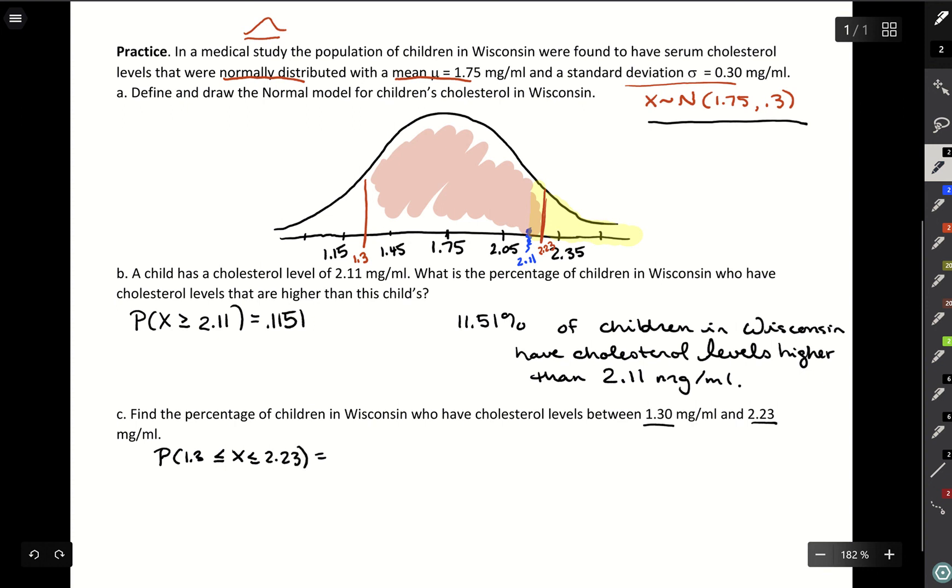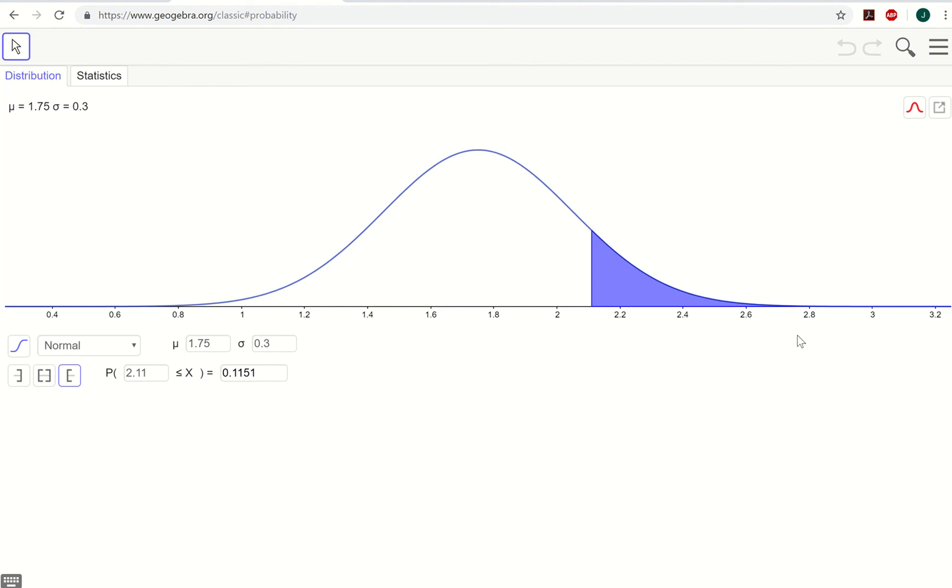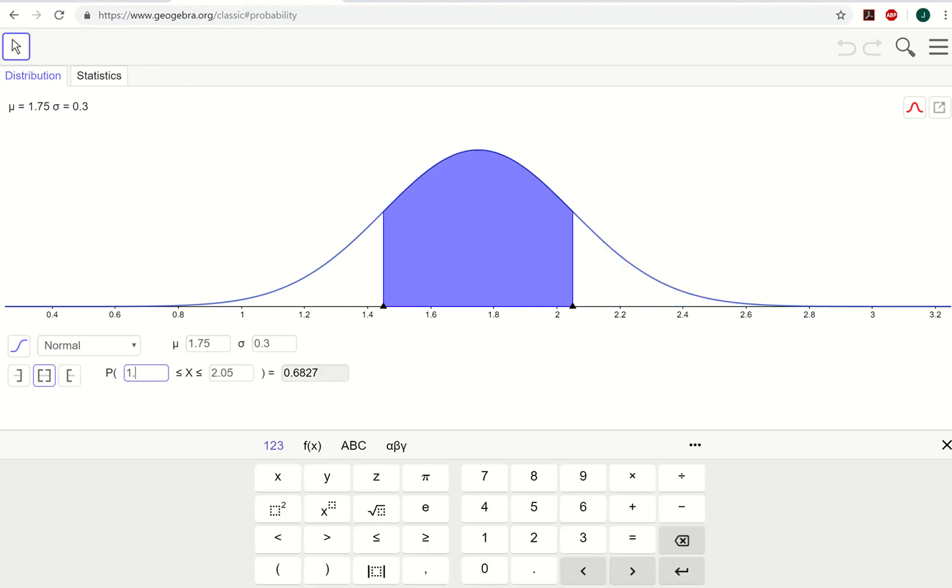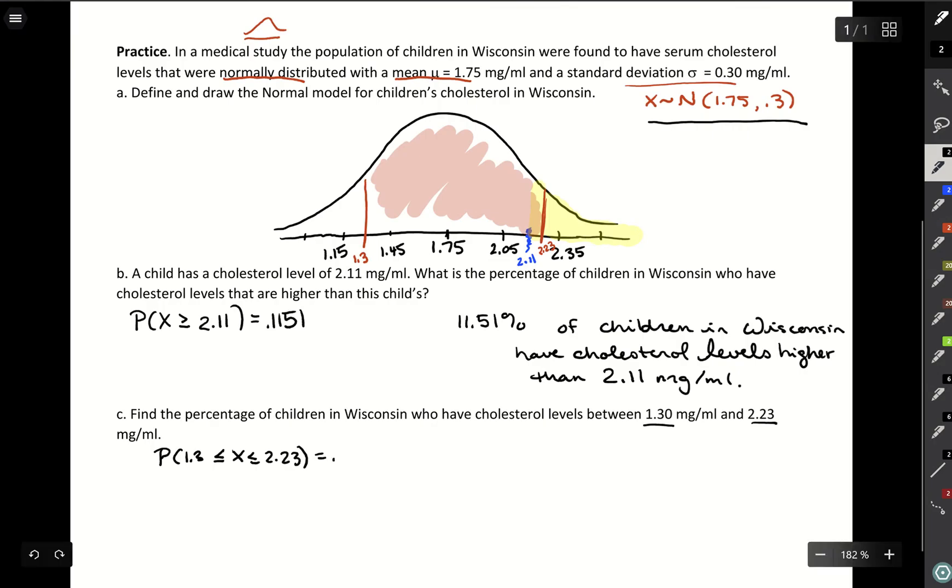We go to GeoGebra. We set it so it's looking between two values. Our lower bound is that 1.3, upper bound 2.23. And it's going to be 0.8784. So there's this 87.84% chance a child has a cholesterol level between 1.3 and 2.23.